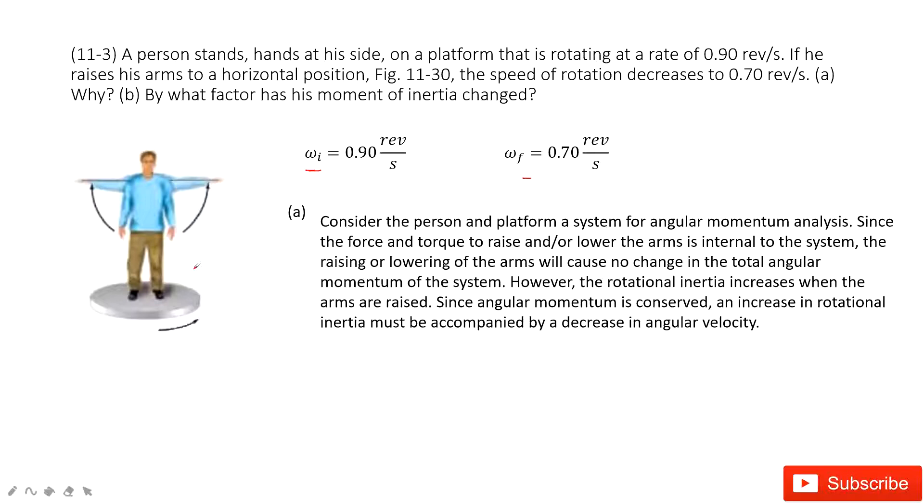So initial angular momentum must equal to the final angular momentum. So we can see, initially, it's I omega_i. Finally, it's I_final, omega_f.